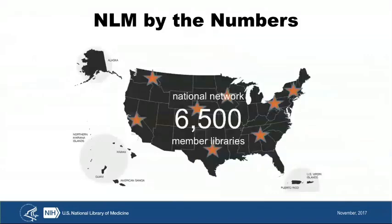We have a human network in addition to our electronic network. Our National Network of Libraries of Medicine is supported by eight regional centers around the country, and these networks play a very important role as we move into data-driven discovery, connecting academic health science libraries, hospital libraries, and public libraries. Our National Network of Libraries staff are being trained increasingly on how to become data-sophisticated librarians — how to assist in uploading datasets to public repositories, how to discover datasets for investigators, and how to produce a data management plan for a research project.